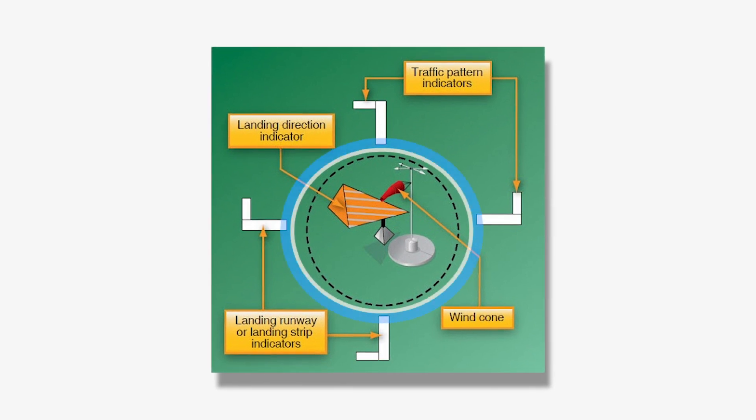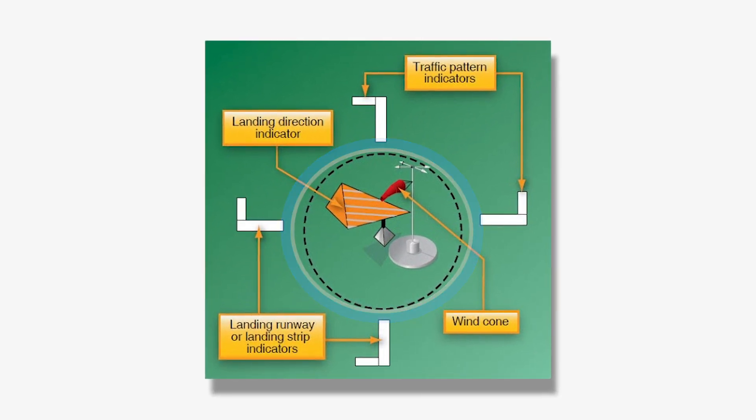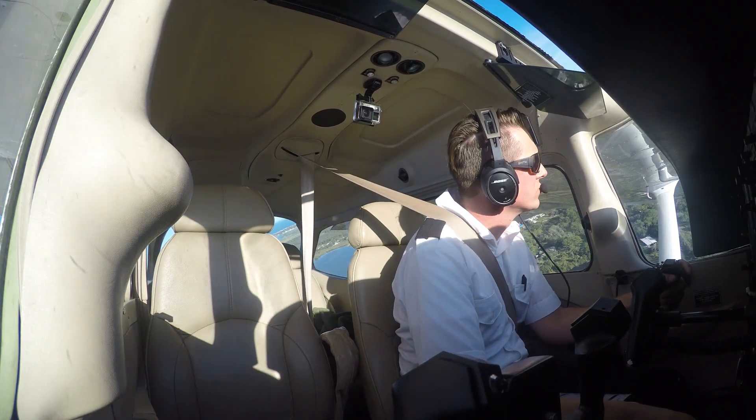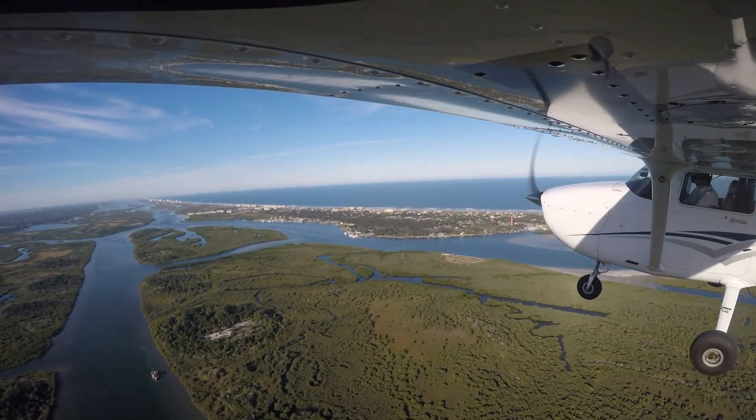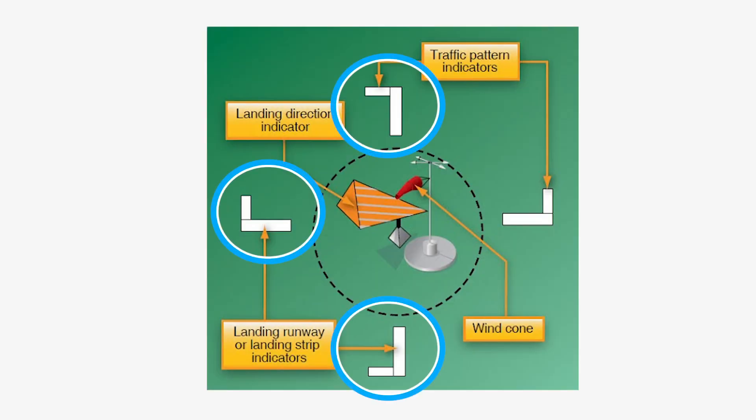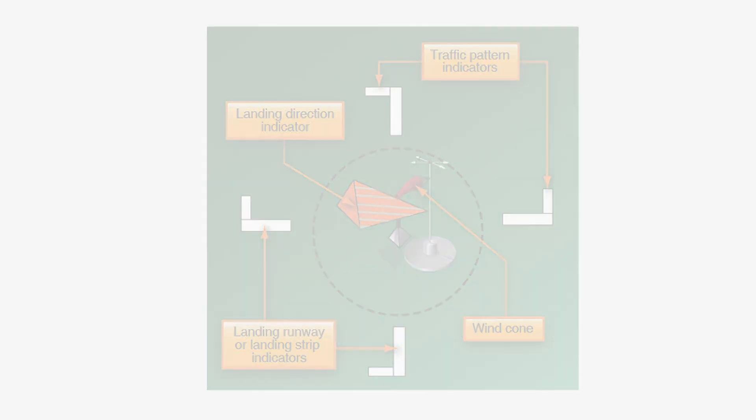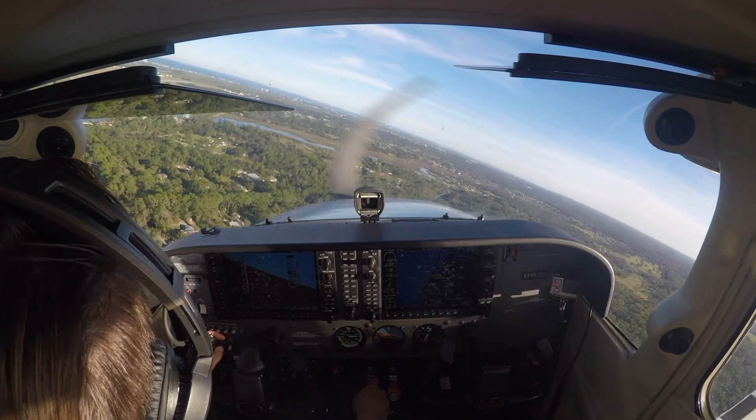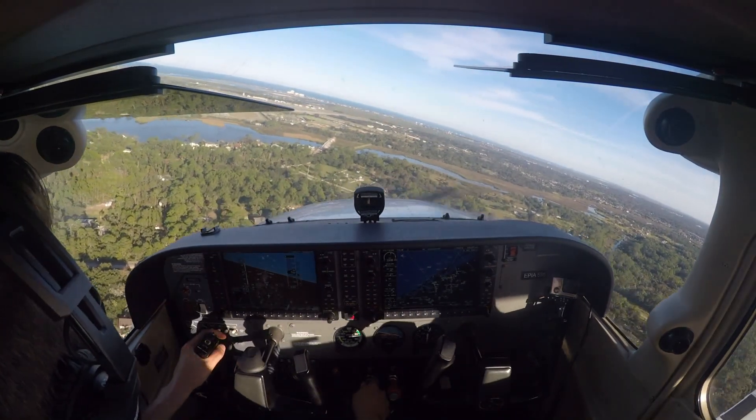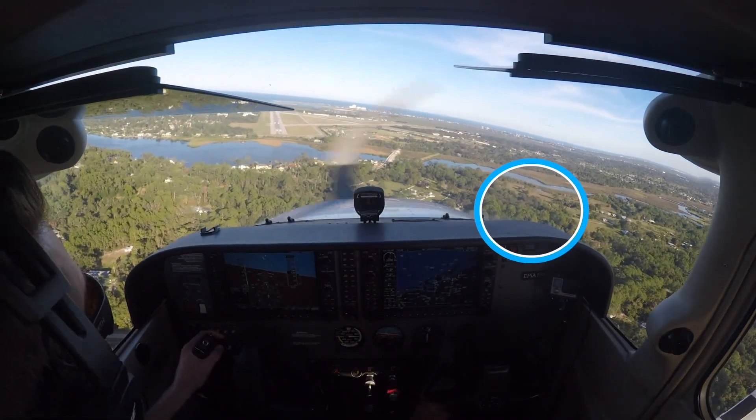Segmented circles, usually located in the center of the airport surrounding a wind indicator, also helps a pilot identify what direction turns should be made in the traffic pattern for a specific runway. The traffic pattern indicators located outside of the segmented circle represent the base and final approach leg of the pattern. The pilot can review the traffic pattern indicators before entering the traffic pattern to ensure they are conducting the appropriate turns per that runway's traffic pattern.